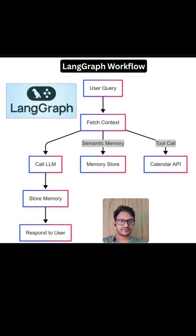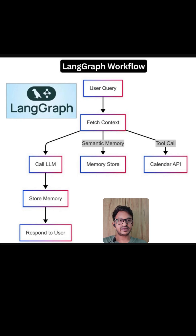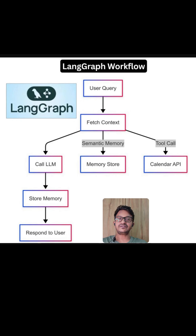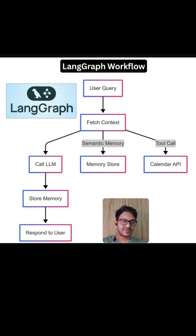LangGraph is an extension of LangChain, built on top of it, and is designed for creating stateful, cyclic, multi-agent workflows. You can basically build or create agentic and dynamic workflows using LangGraph. It treats your application as a graph where nodes can loop back, make decisions, and maintain complex state.